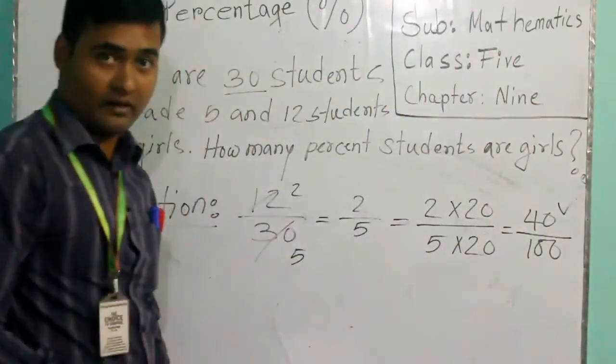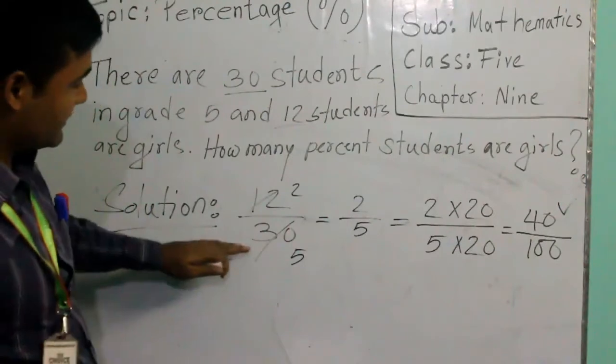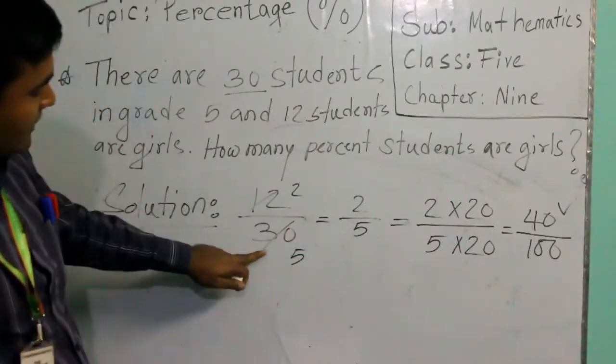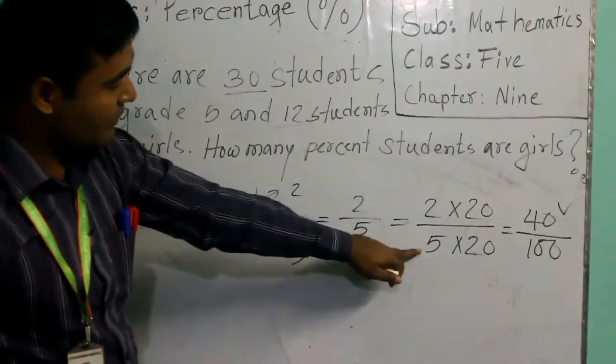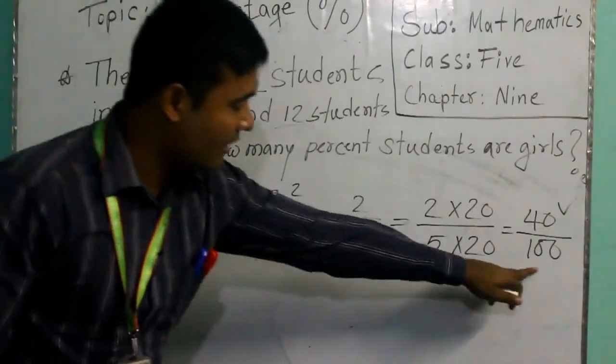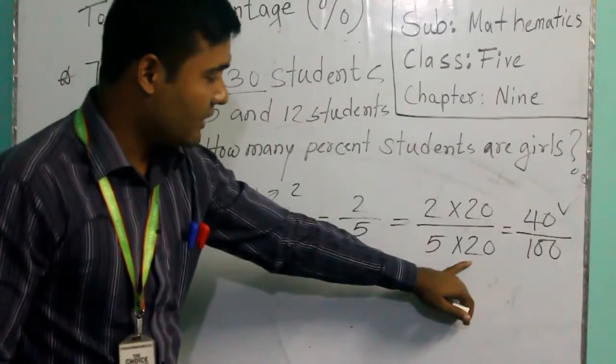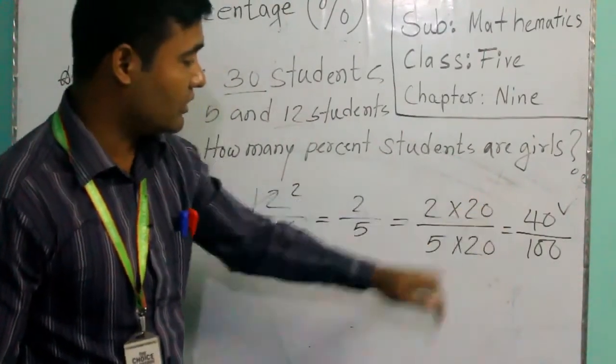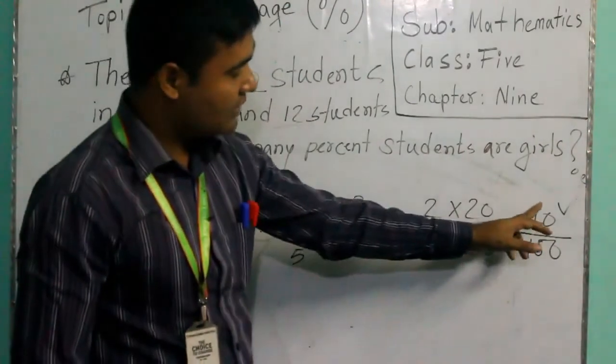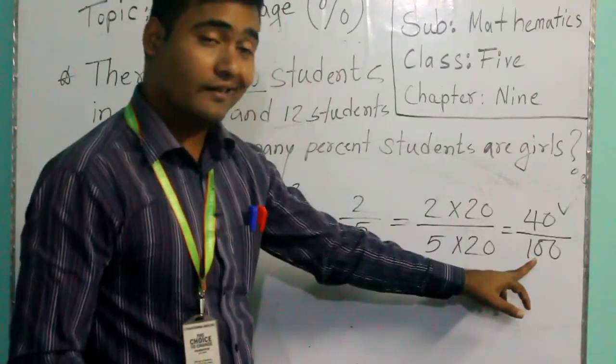Now is this similar? Check the steps properly. We divided here, we got 5 upon 2, then 5 upon 2 - we need to make this one 100. That is why we multiplied with 20. 20, and same time we need to do on the top. And we did like this, then we got 40 and 100.